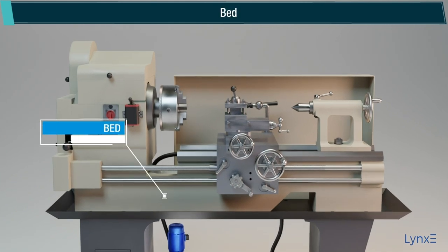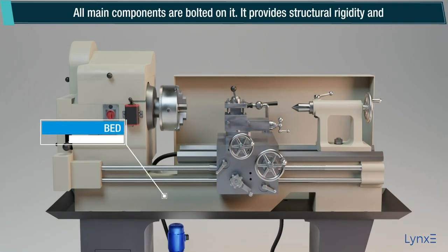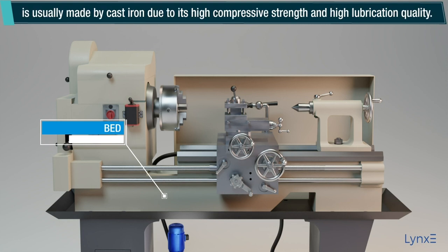Bed: The lathe bed is the main body of the machine. All main components are bolted on it. It provides structural rigidity and is usually made of cast iron due to its high compressive strength and high lubrication quality.